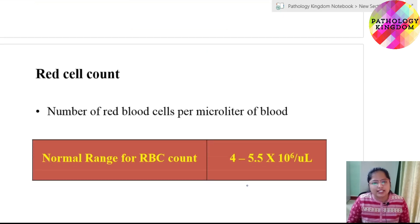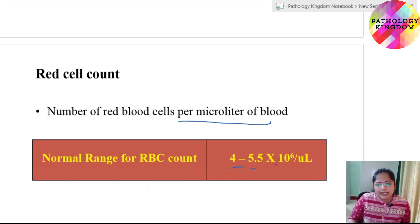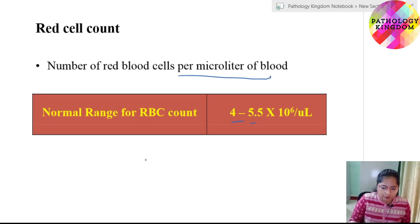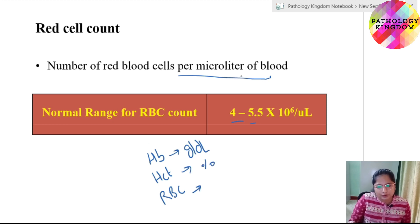The red cell count is the number of red blood cells per microliter of blood. The normal range is approximately 4 to 5.5 × 10⁶ per microliter. To calculate RBC indices, we must know hemoglobin in gram per deciliter, hematocrit as a percentage, and RBC count per microliter of blood.